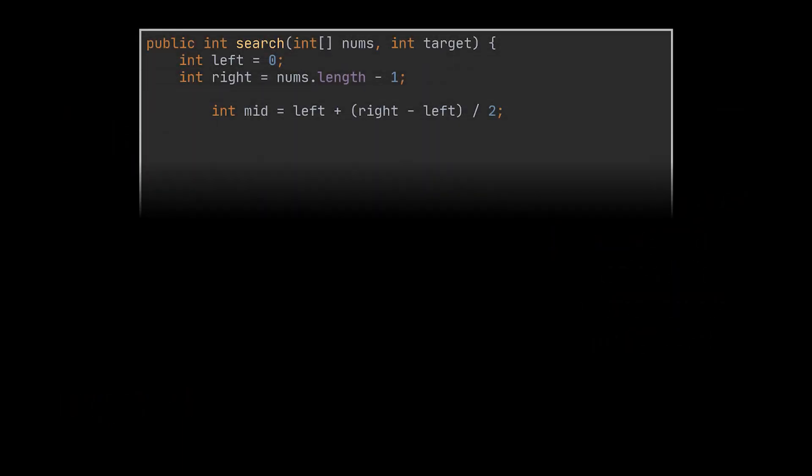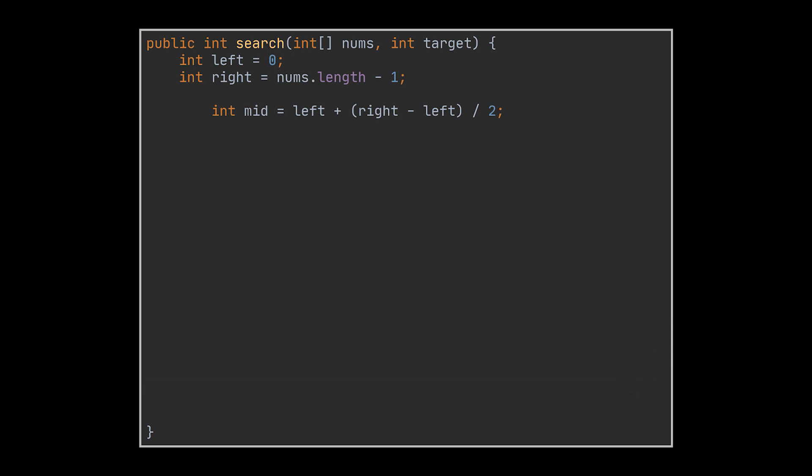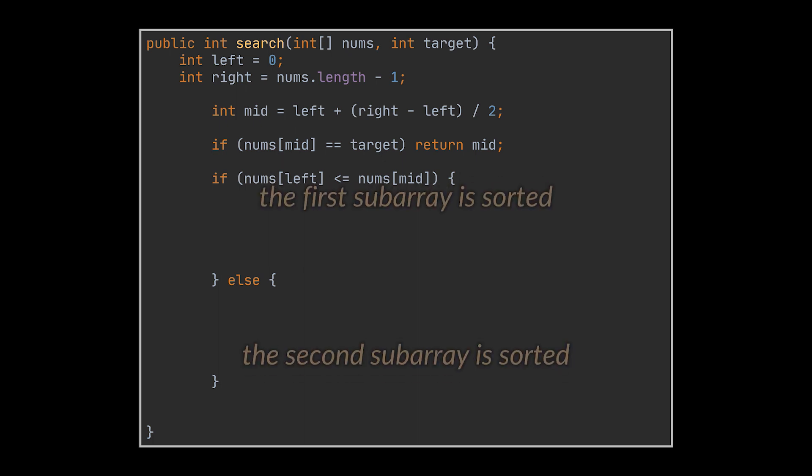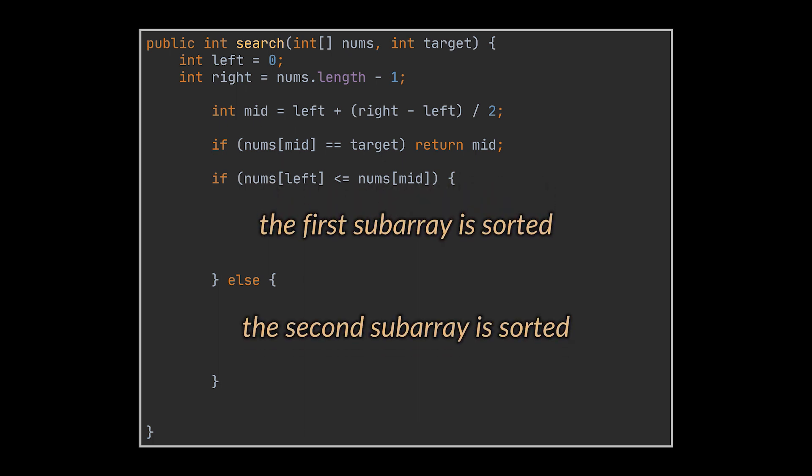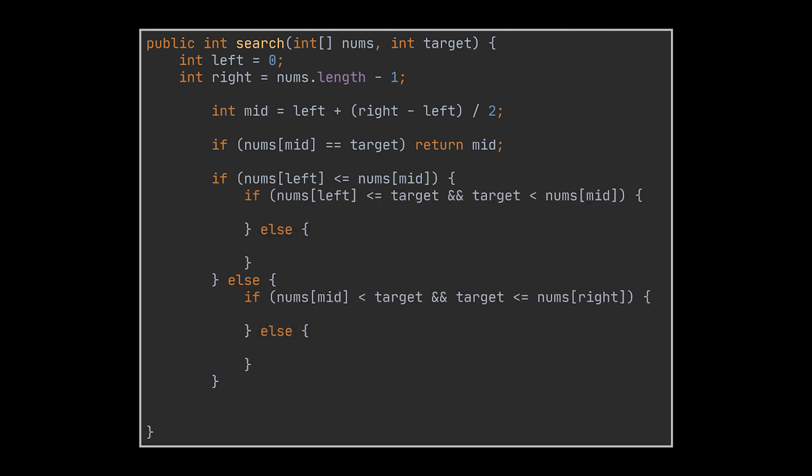To implement this solution, we are going to start by cutting the given array into two. Then if we're lucky and the target value we are looking for is in the middle, all we must do is return it. However, if it isn't, we need to identify which chunk is the sorted one. And this is done by comparing the first value to the last value of that chunk. So if the first value is smaller than the middle one, then the first sub array is sorted. If not, then the second half is.